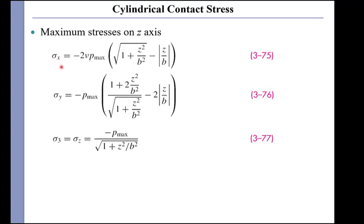Again, we can identify the stresses in the plane of contact, the x and y stresses, and then the stress z that is below the surface of contact going into the contacting body, one or the other. It doesn't matter which one. They have these equations 375 through 377. Once you have found the maximum pressure, you can find sigma x, sigma y, and sigma z.